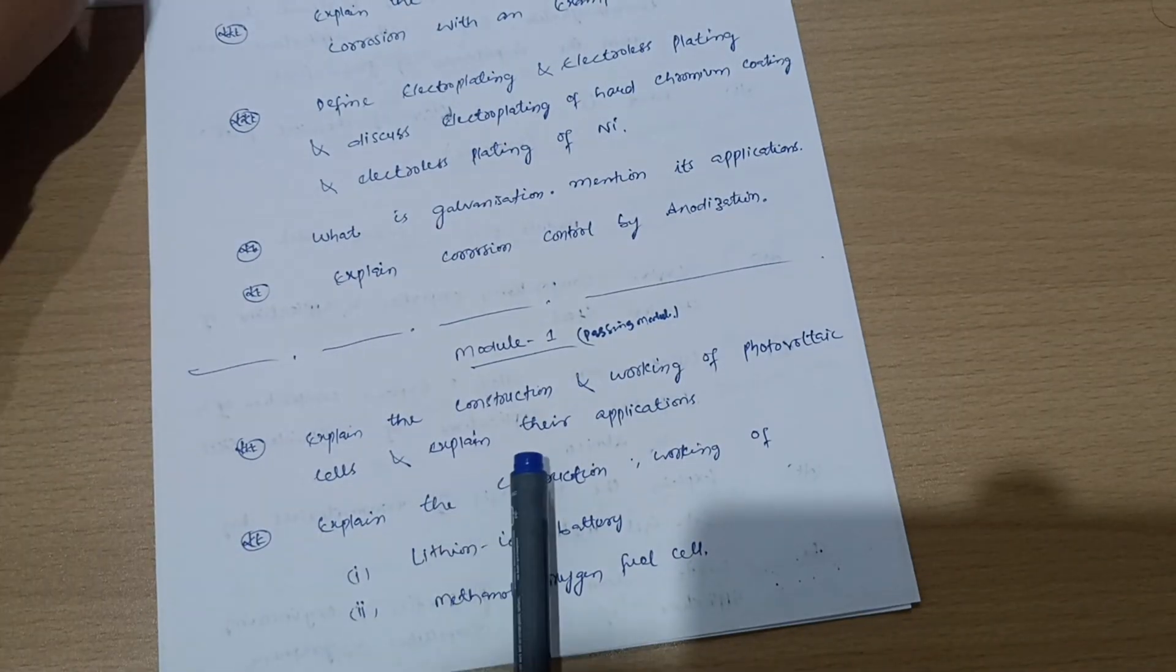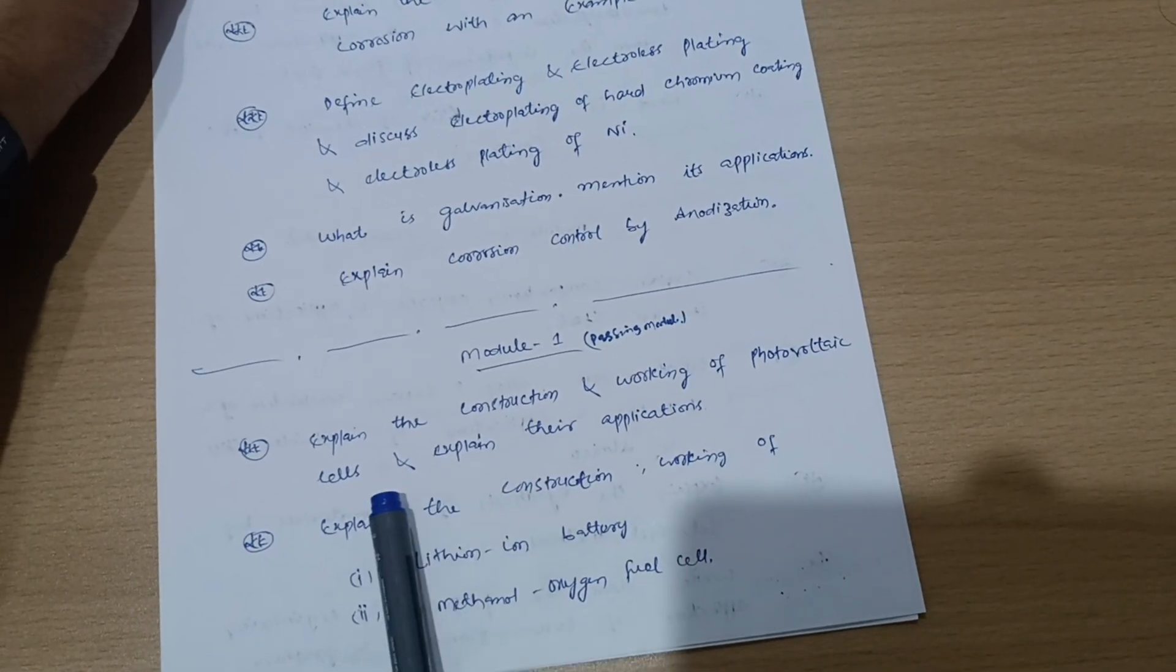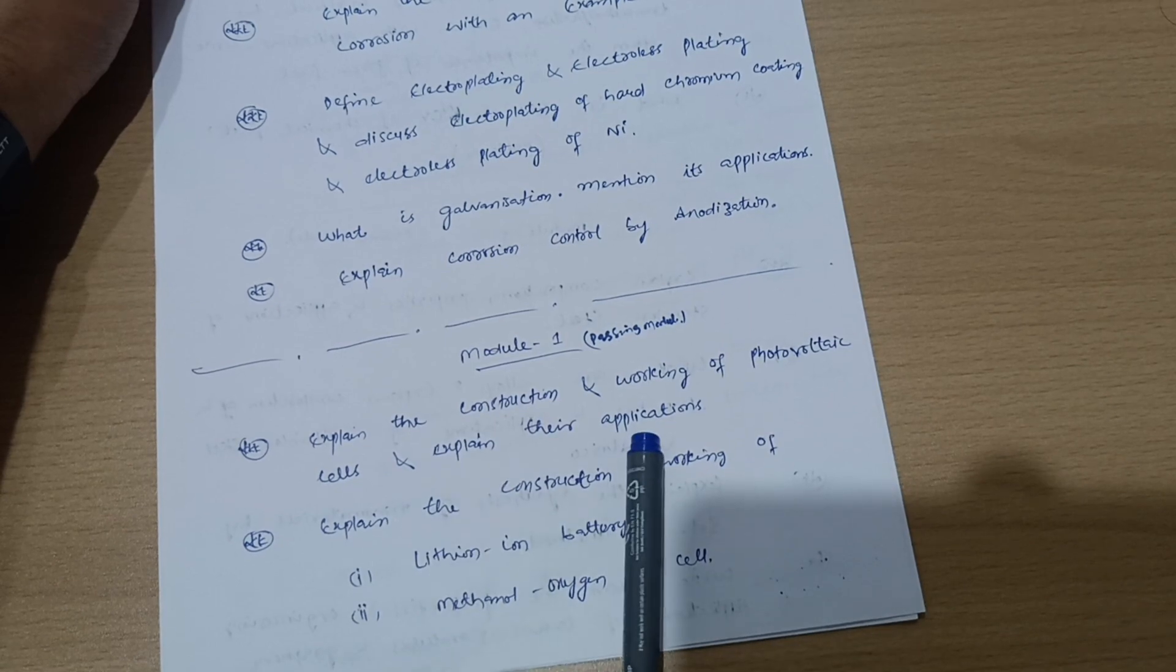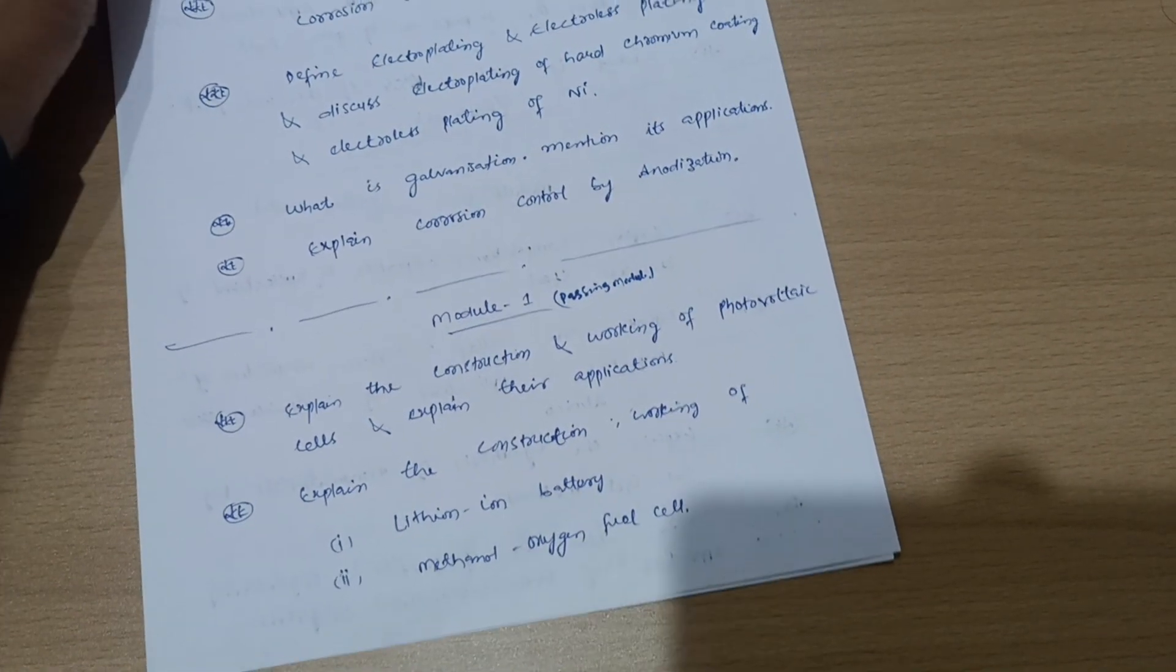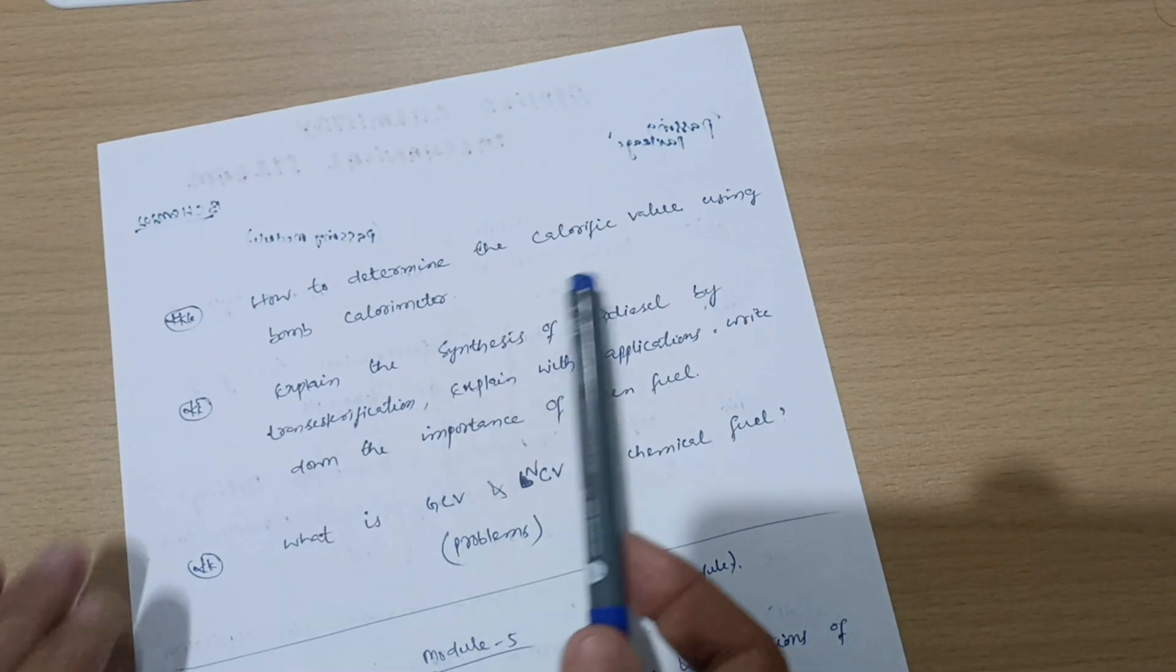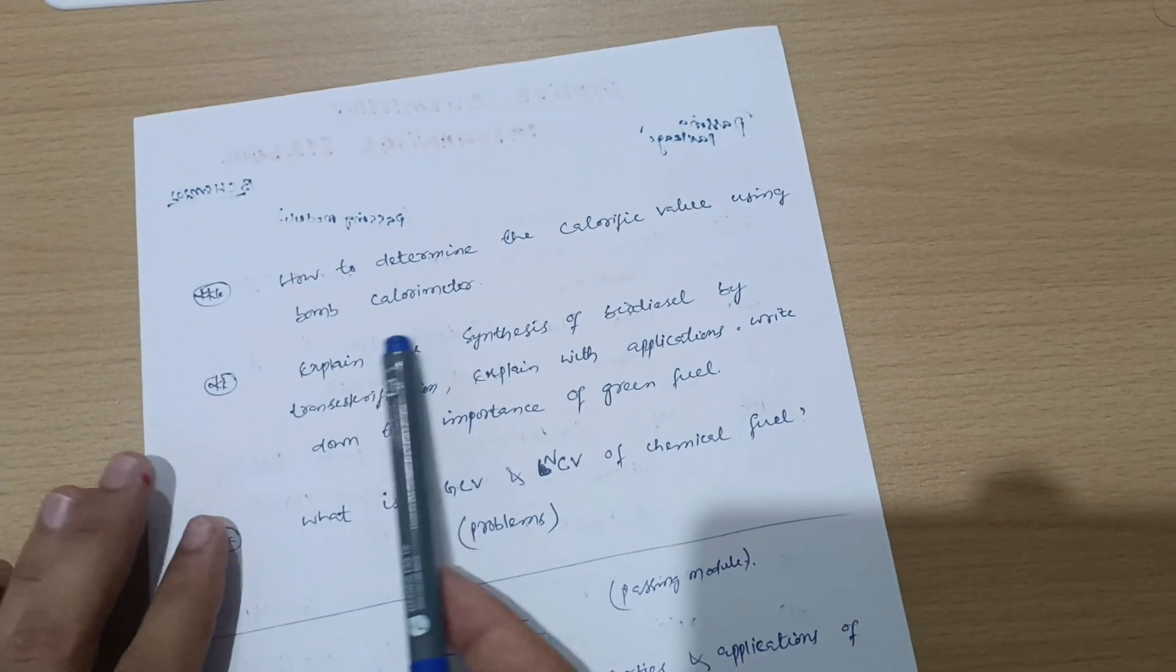Next is Module 1. It is again a passing module in which you have to cover some super important questions like explain the construction and working of photovoltaic cells and explain their applications. Explain the construction and working of lithium ion battery and methanol oxygen fuel cell.